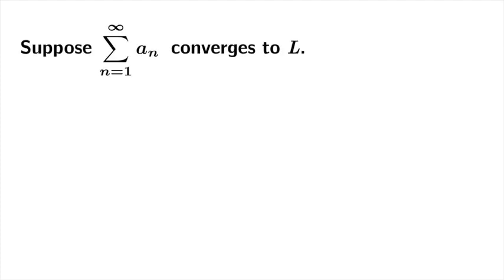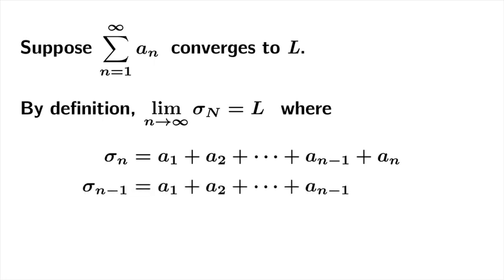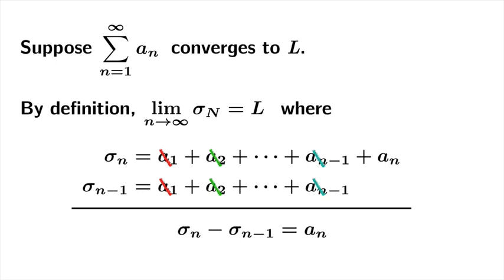Back to our main theme. Suppose the series with terms a_n converges to the limiting value L. By definition, the partial sums converge to L, where the nth partial sum is the sum of a_1 through a_n. The previous partial sum, sigma_{n-1}, is just the sum up to a_{n-1}. If you subtract those two partial sums, you get sigma_n minus sigma_{n-1} on the left, and a_n on the right. In other words, if you take the previous partial sum and add a_n, you get the new partial sum.